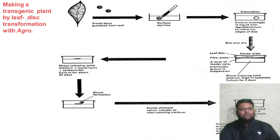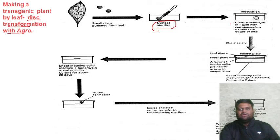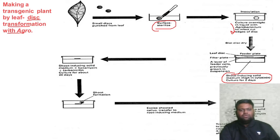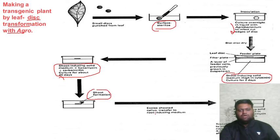This is how we make a transgenic plant by the leaf disc method with Agrobacterium transformation. Small discs are punched from the leaf and the surface is sterilized. Inoculation: the discs are cultured overnight in liquid with Agrobacterium to infect the cut edges of the disc. They are then placed on a filter plate with a layer of feeder cells previously grown in suspension. The discs are kept on shoot-inducing solid medium for 2 days, then transferred to shoot-inducing medium plus kanamycin and carbenicillin for about 20 days until shoot formation begins. The shooted callus is excised and transferred to root-inducing solid medium plus kanamycin and carbenicillin. The plantlet is then transferred to soil as soon as roots appear, within four to five weeks after inoculation.